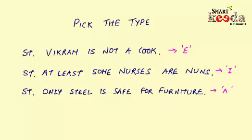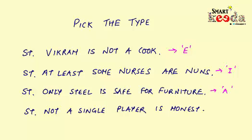Now we have another statement: 'Not a single player is honest.' You can see that the sentence is starting with the phrase 'not a single,' which means the writer or speaker is taking all the players into consideration but in a negative context. Therefore it will be taken as a universal negative kind of statement and we will denote it with the letter E.